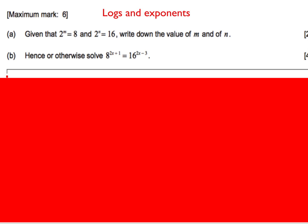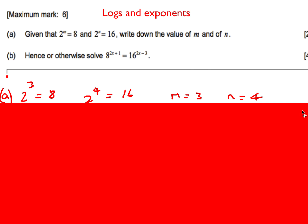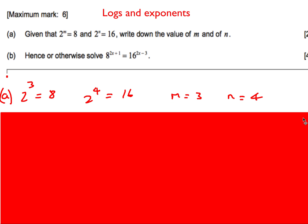First question: given that 2^M = 8 and 2^N = 16, write down the values of M and N. This is a straightforward starter — 2³ = 8 and 2⁴ = 16, so M = 3 and N = 4. That's a fairly generous two marks.